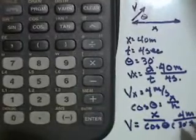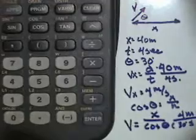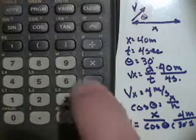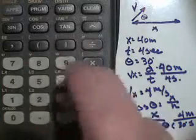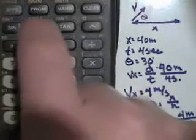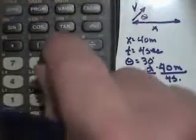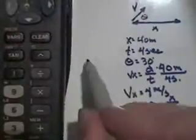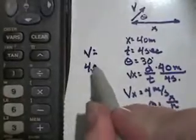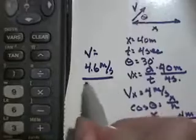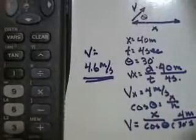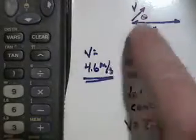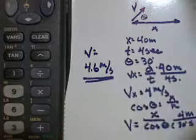The units stay as meters per second. We punch that into our calculator as 4 divided by — I like to use parentheses to isolate the order of operations — parentheses, cosine of 30. When I hit equals, I get 4.6. So my actual velocity equals 4.6 meters per second. Given the x-velocity and the angle, I can find the actual velocity.